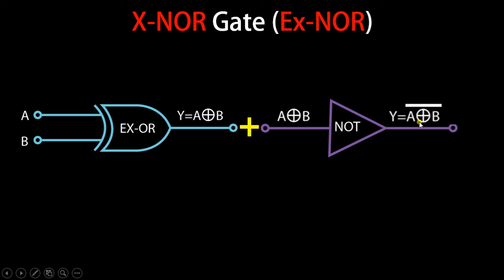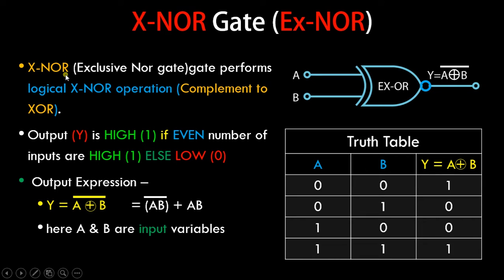So you can see the output is going to be complement of what an XOR gate is. So this is how an XNOR gate works, or Exclusive NOR gate works. So now let's see its truth table and a little bit about the input and output scenarios. As you can see on the screen, XNOR, that is Exclusive NOR gate, performs logical XNOR operation which is exactly complement to an XOR operation. You can see the gate symbol is exactly similar to XOR gate.